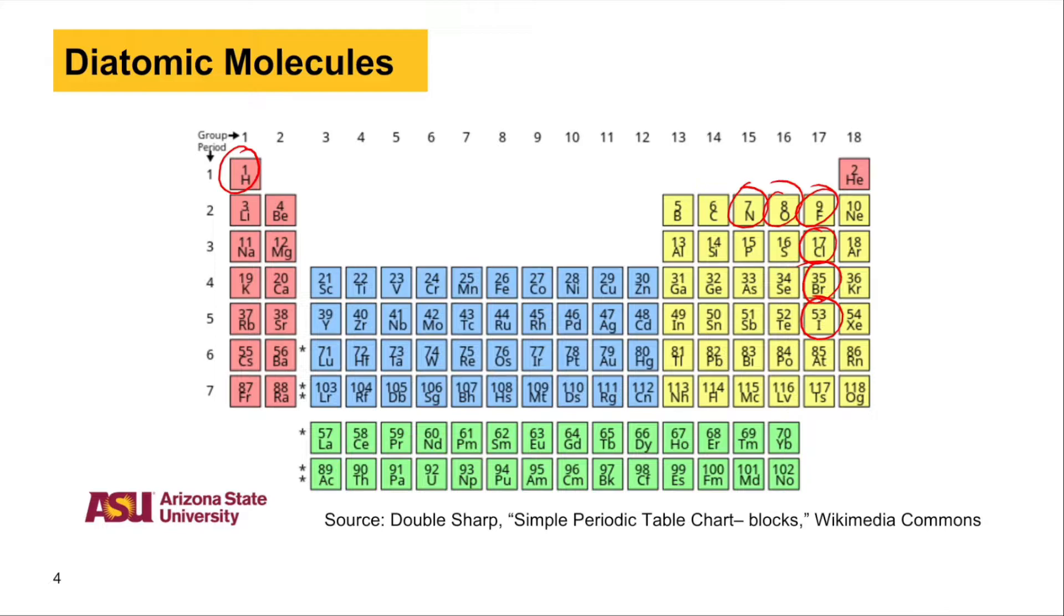For example, the oxygen in the air that we breathe is naturally a diatomic molecule. So there are two oxygens held together by a double covalent bond.